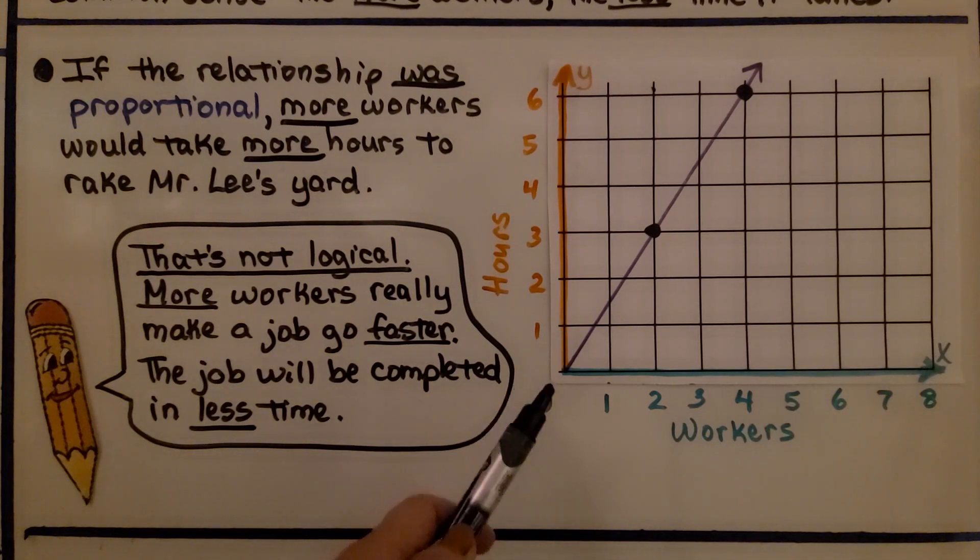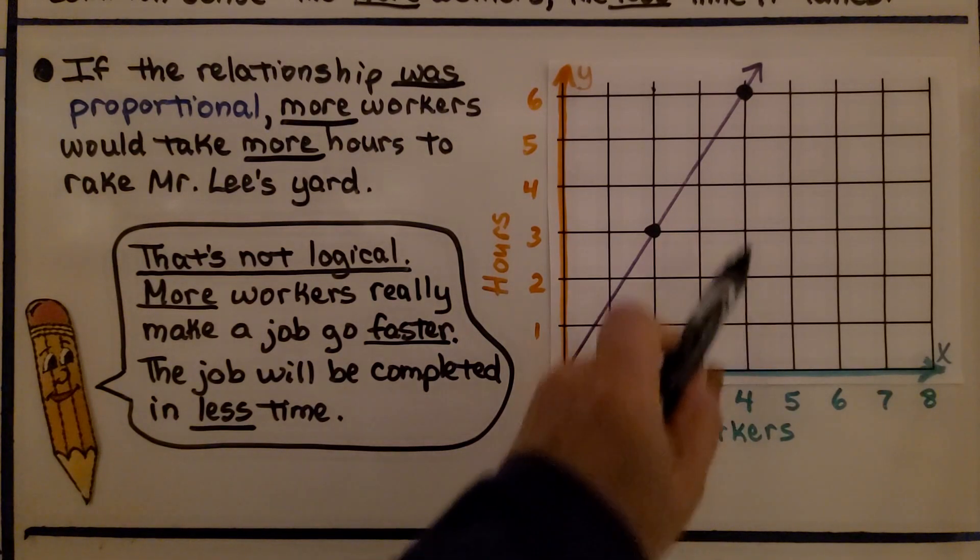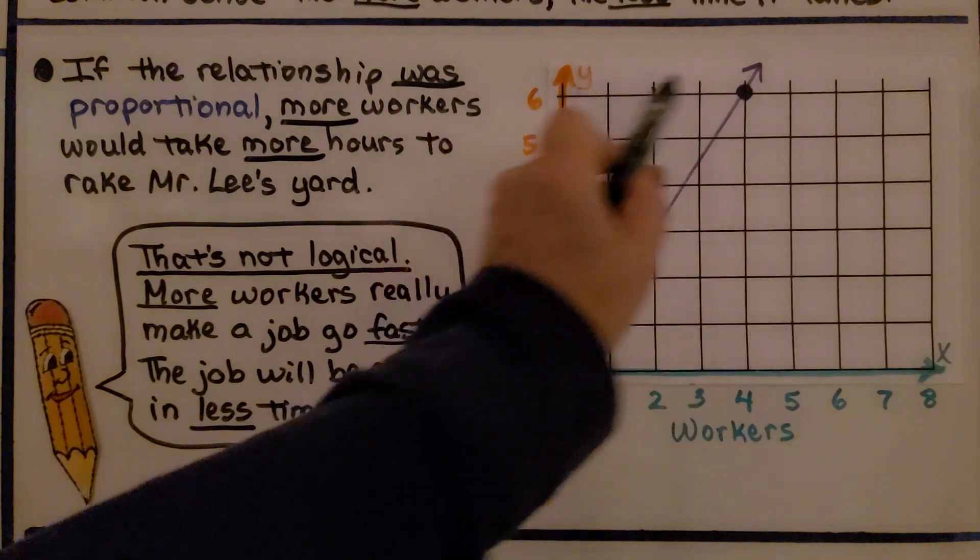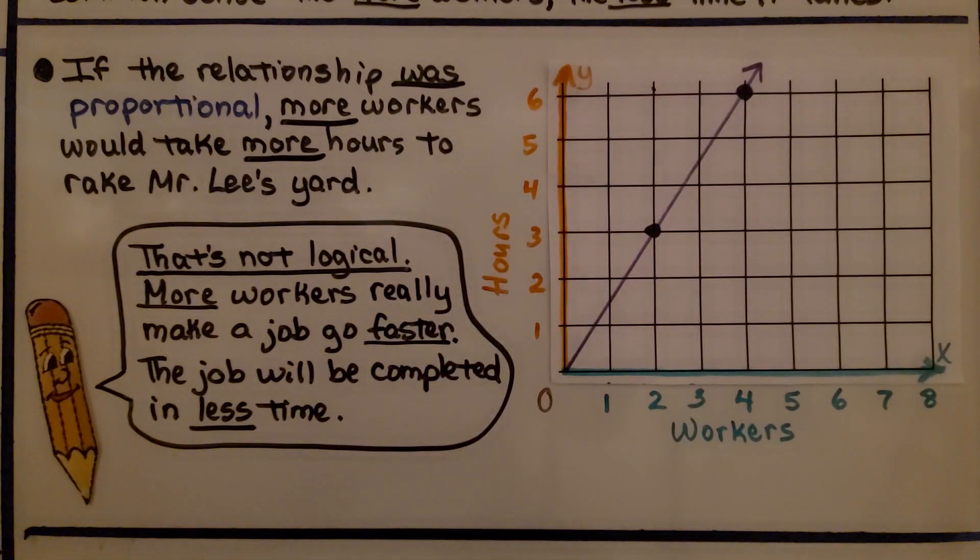Even though we can make this graph and make it go through the origin, it doesn't make sense that 4 workers would need 6 hours. It's not logical.